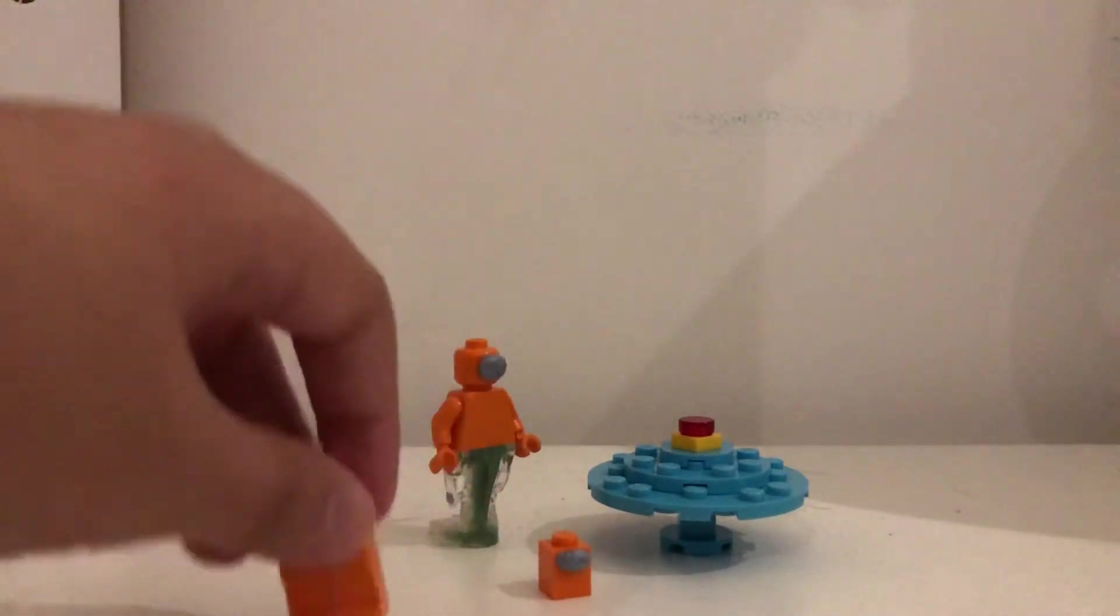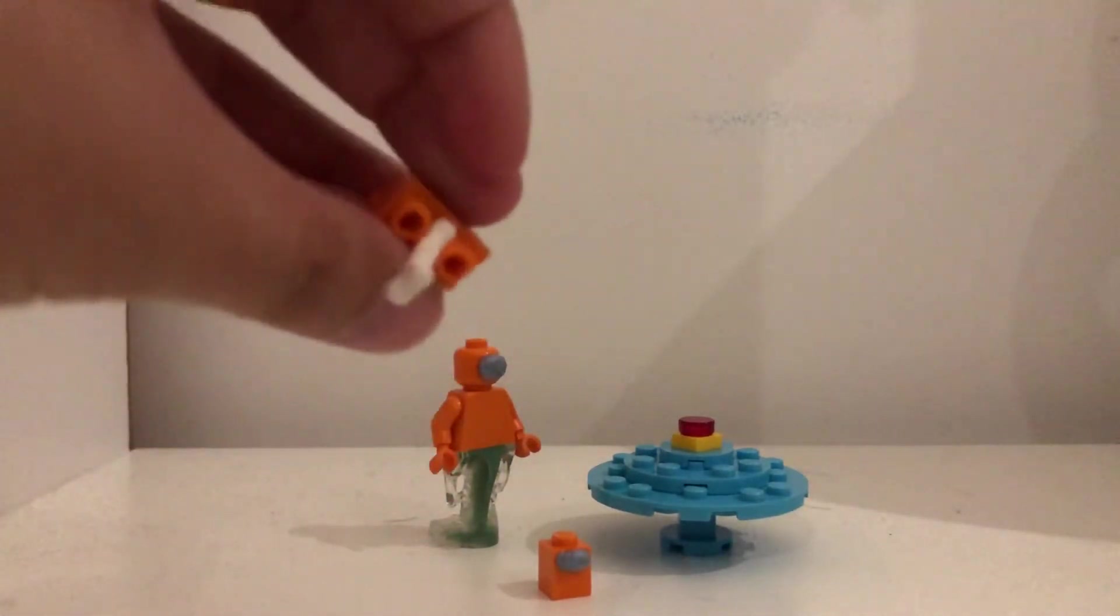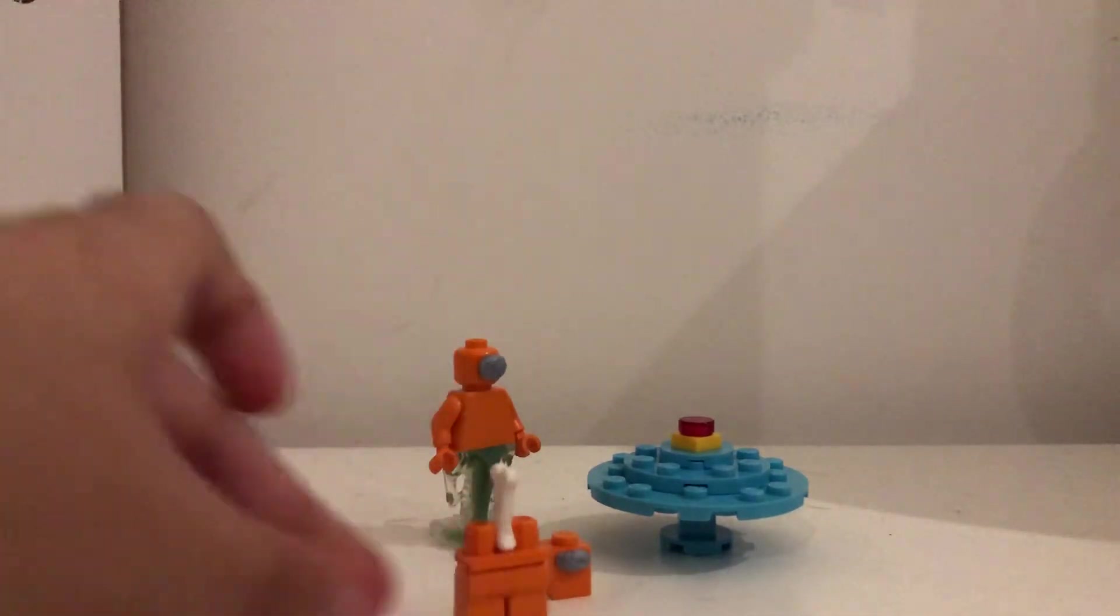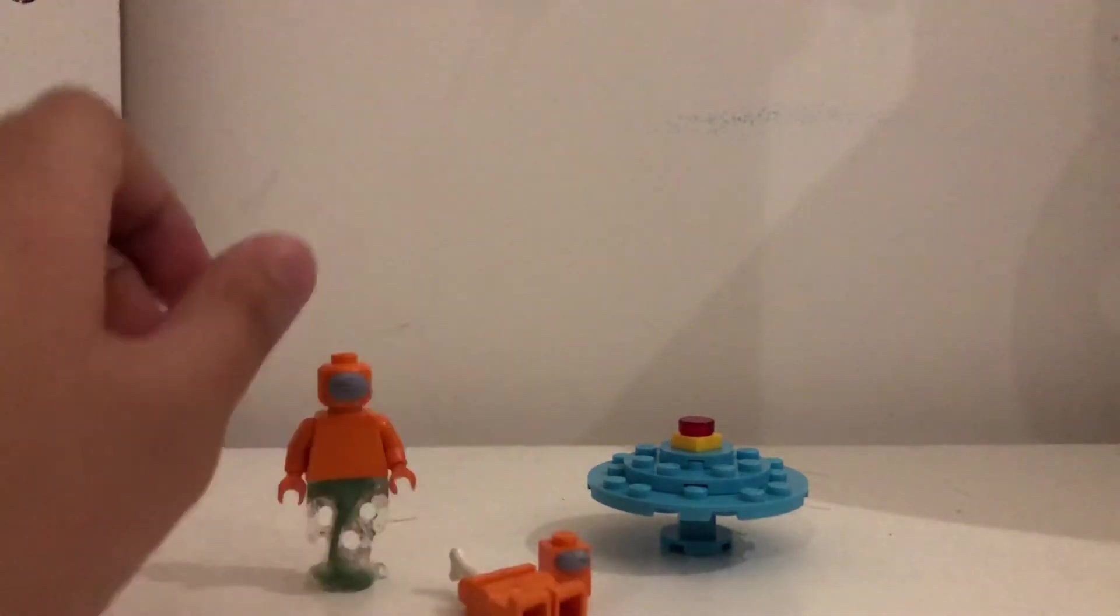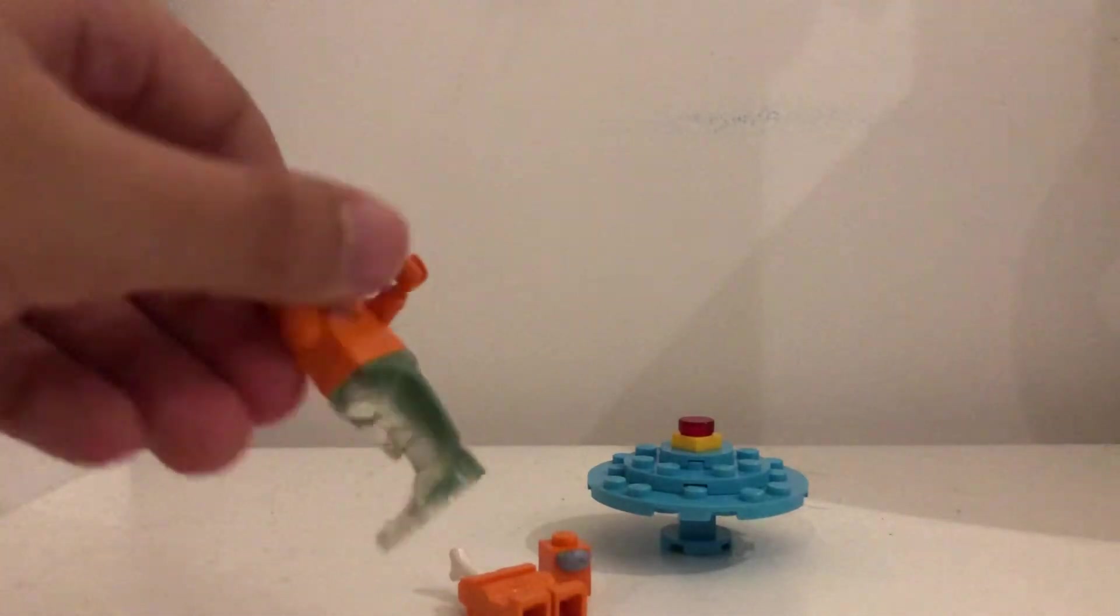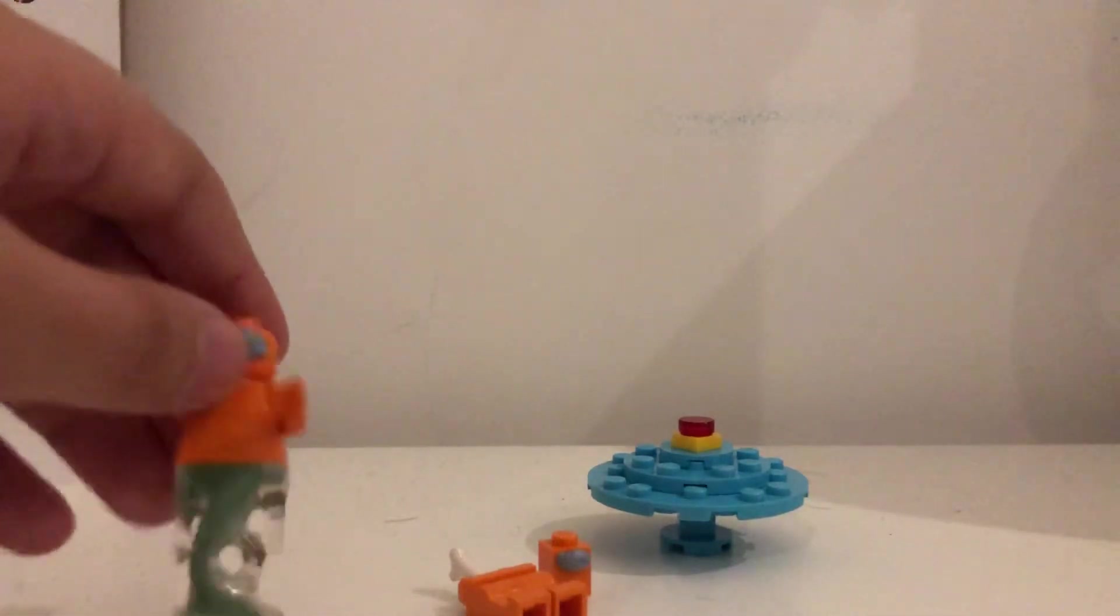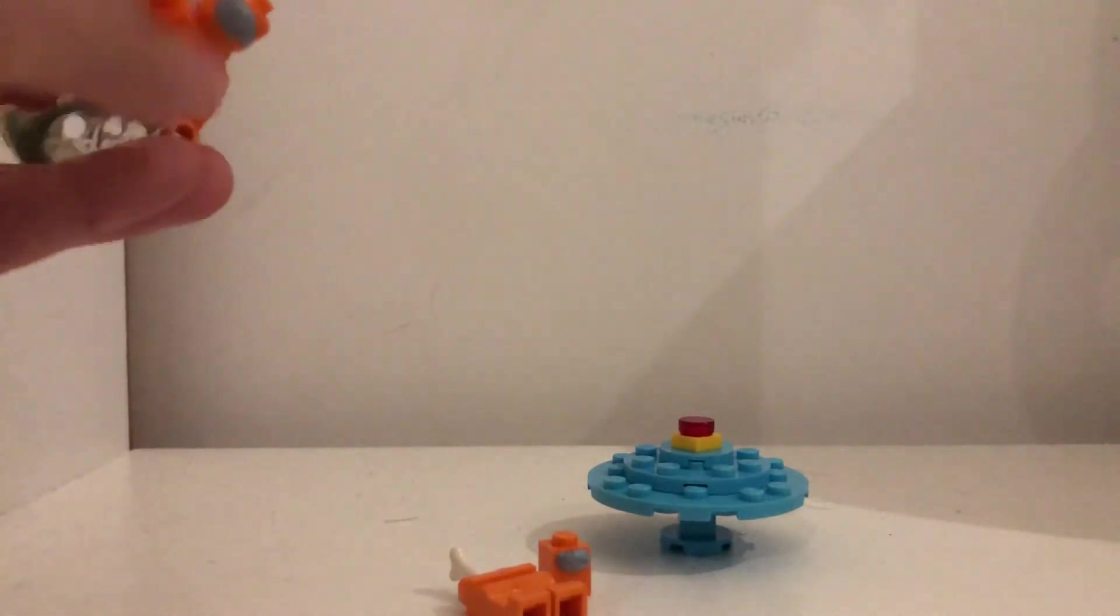This is an early LEGO minifigure series. I think it came out in 2015 or 2014. I'm not quite sure, but it came on a ghost, that's all I know. So I'm going to use this plain orange body with orange arms and orange hands.